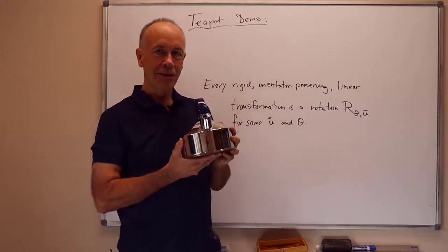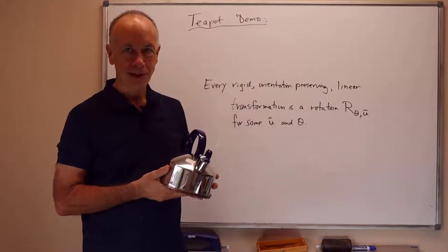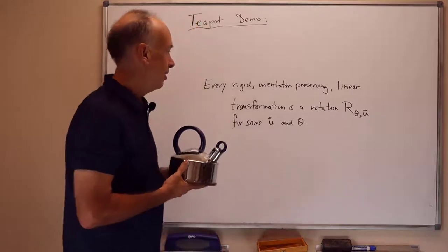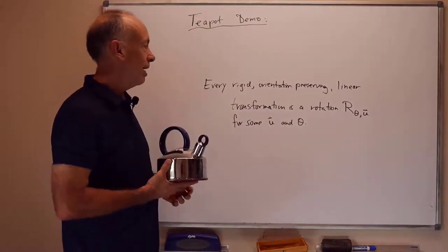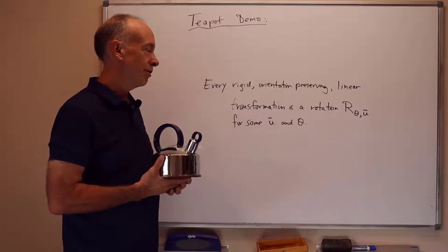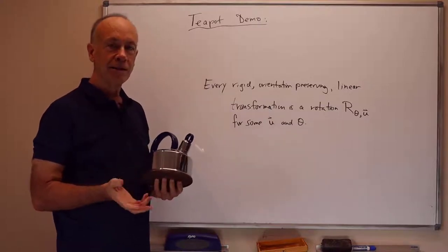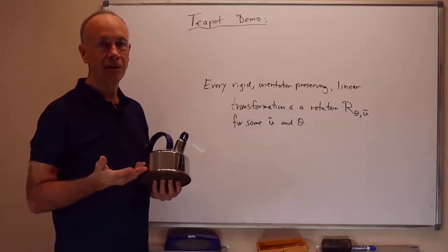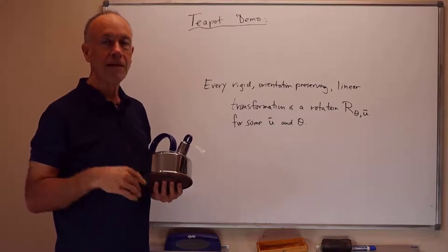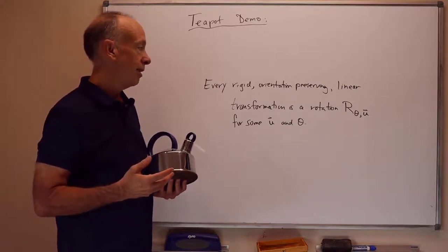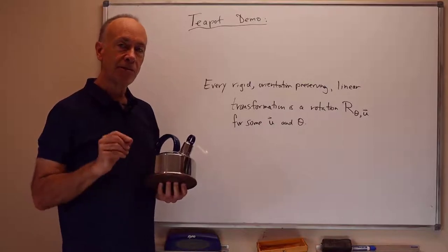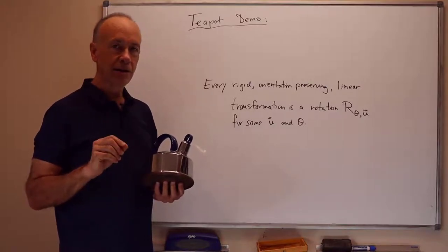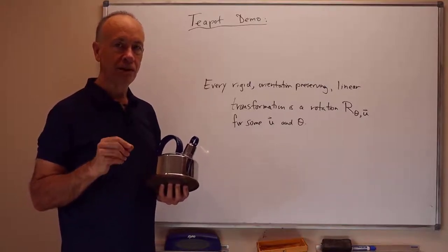I'm going to use a physical teapot for a moment, and then we'll use a more reliable computer teapot in just a second. But here's the general principle: if you have a rigid orientation-preserving map that's linear in R3, or even just holds the origin fixed in R3, then it's a rotation r theta u around some axis u with the axis passing through the origin.